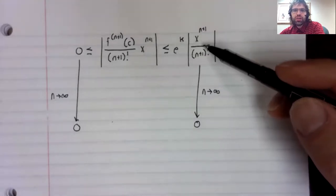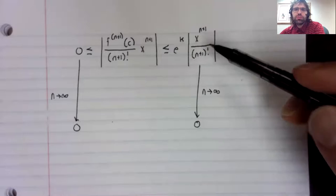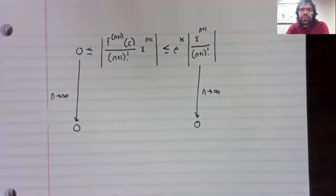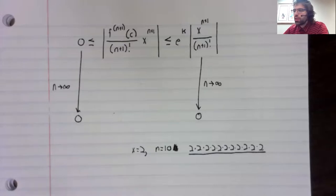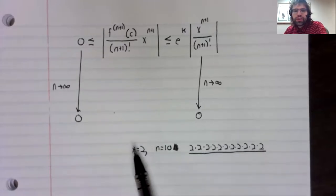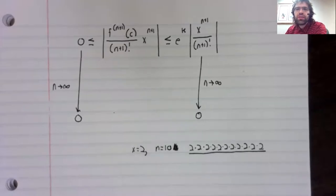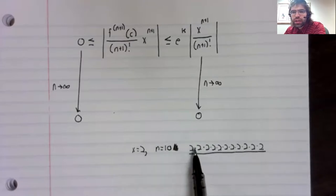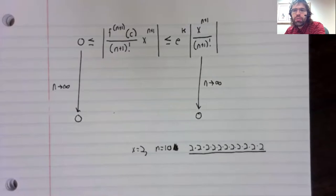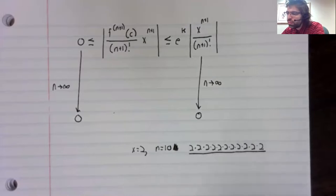And this is true as n goes to infinity, this goes to zero for a fixed x. And that might not be immediately obvious, but I think we can convince ourselves that it's true. Let's look at some fixed x and some large n. Here's our numerator. If x equals 2 and n equals 10, for example.